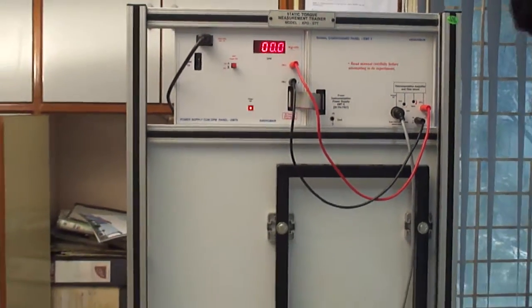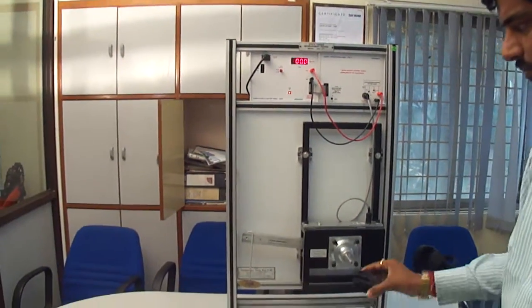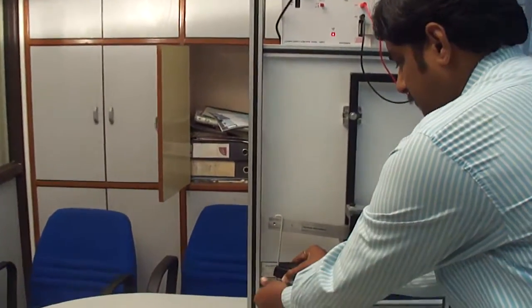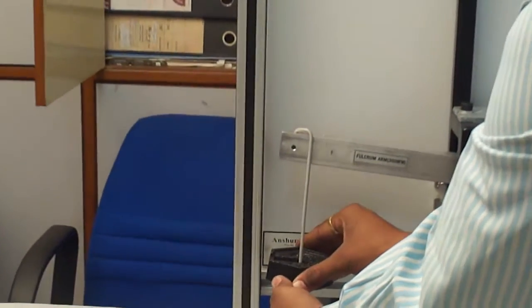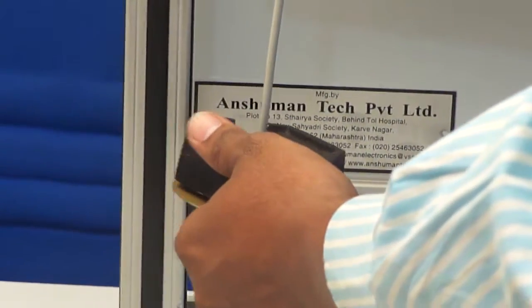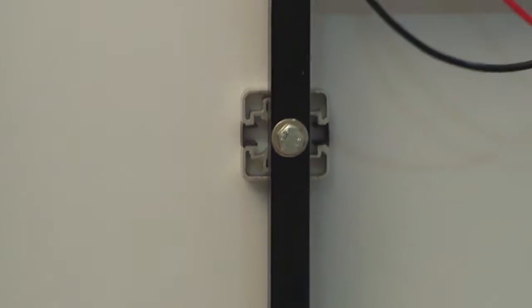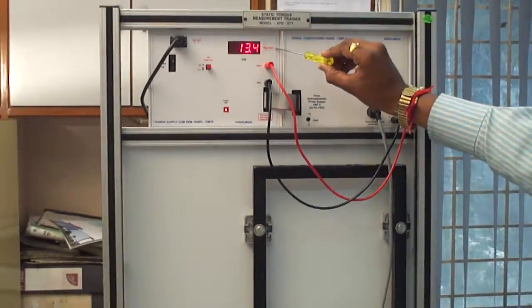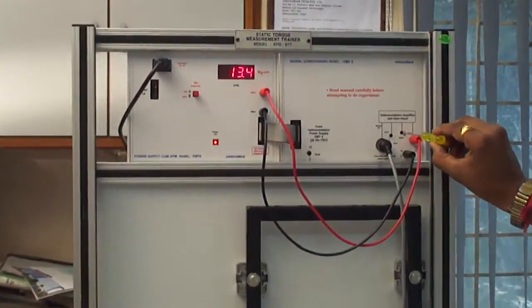Now put 500 gram weight on this pan and adjust the 15 kg cm by using this pan preset.